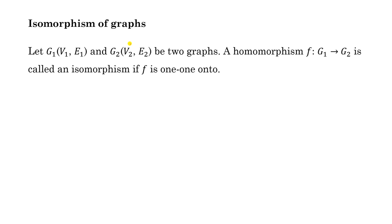Now, isomorphism of graphs. Let g1 = (v1, e1) and g2 = (v2, e2) be two graphs. A homomorphism f from g1 to g2 is called an isomorphism if f is one-to-one and onto. So the first condition is that f must be a homomorphism as defined earlier.